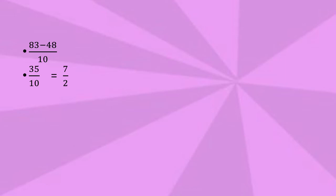That gives us 35/10. Since 35/10 can be further reduced, the common factor is 5. Dividing both numerator and denominator by 5 gives 7/2. We can also convert 7/2 into a mixed fraction, which is 3 and 1/2.